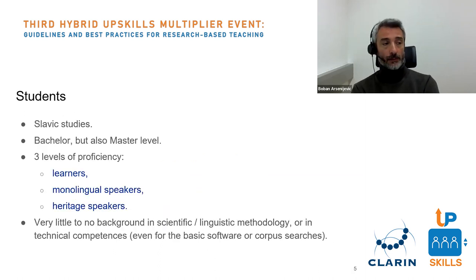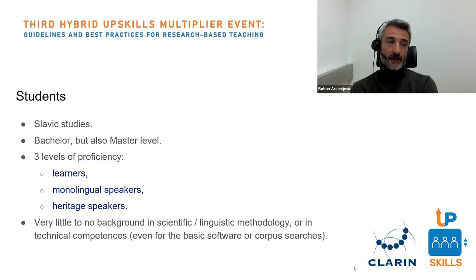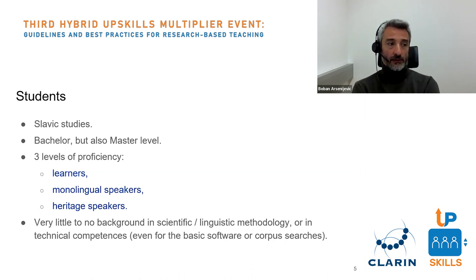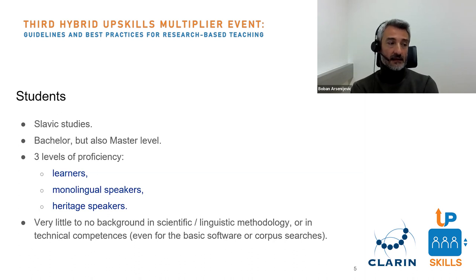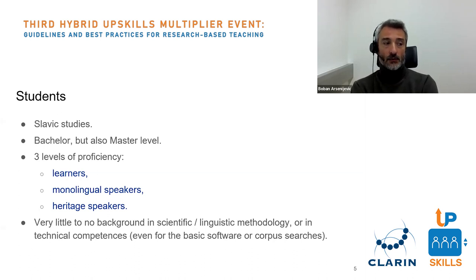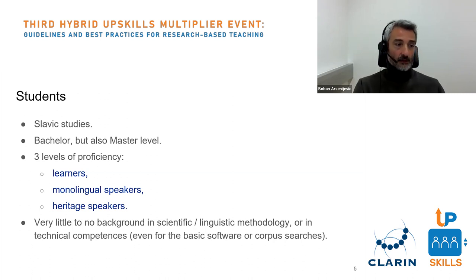The students these courses were prepared for are all studying Slavic studies — not just linguistics, but also Slavic cultures and literatures. They are bachelor students, though some courses were for the master level or for both. Students also come with three different levels of proficiency in the target languages: learners who are learning the languages, exchange students from the countries where these languages are spoken, and heritage speakers. Most come with little or no background in scientific methodology or technical competences.